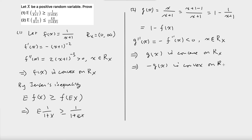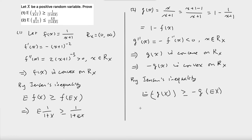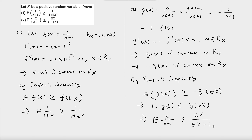By Jensen's inequality, the expected value of negative g(X) is greater than or equal to negative g(E[X]). This implies the expected value of g(X) is less than or equal to g(E[X]), which means the expected value of X/(X+1) is less than or equal to E[X]/(E[X]+1). Thank you for watching.